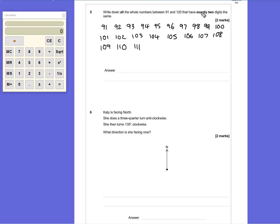111 would not be counted because it must have exactly two digits the same. But then we have 112, 113. All of the teens will also have exactly two numbers the same and should not be ignored.